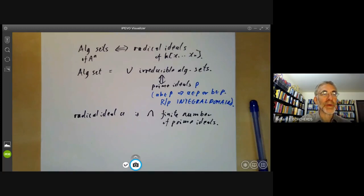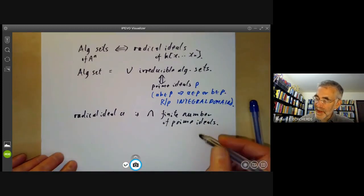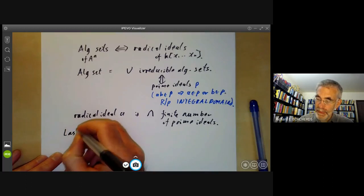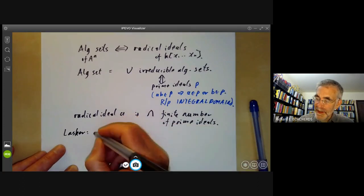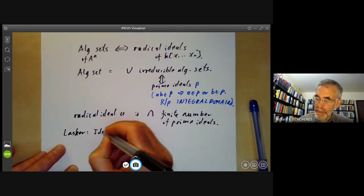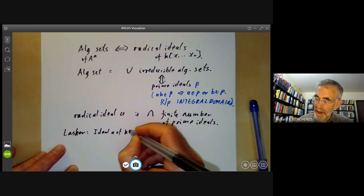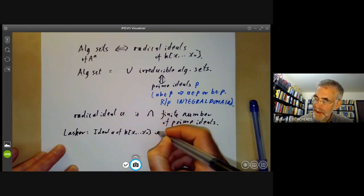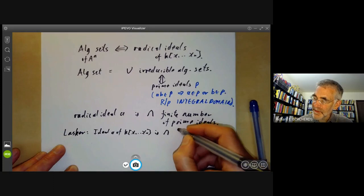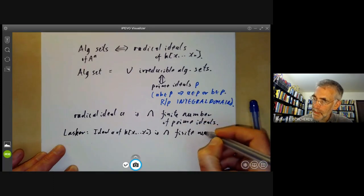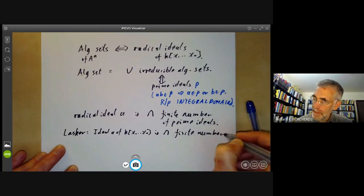And one obvious question is what about ideals that aren't radical? Can you find some sort of similar decomposition? And the answer is given by Lasker, which says that an ideal a of k[x1,...,xn] is the intersection of a finite number of primary ideals.